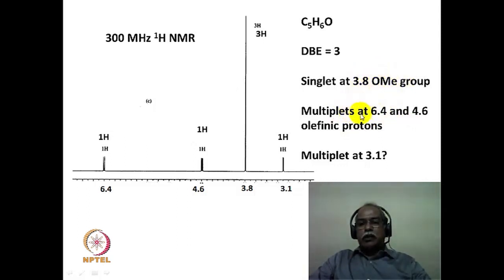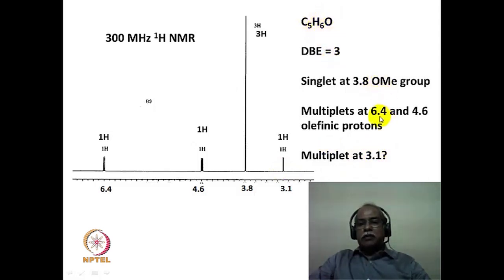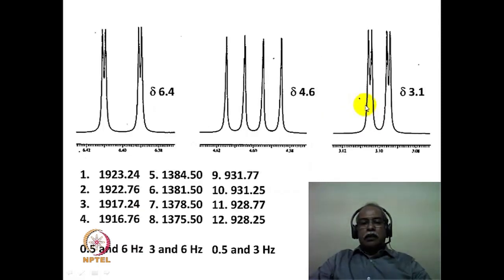The multiplets at 6.4 and 4.6 ppm fall in the olefinic region, so there are two olefinic protons — a C2H2 fragment — along with an OCH3 fragment. Subtracting C2H2 and OCH3 from the molecular formula leaves C2H. With a double bond equivalence of 3, one olefinic bond accounts for one unit, so two more must be accounted for. The multiplet at 3.1 ppm could be due to an acetylene hydrogen, since acetylene typically comes in the region between 2 to 3 ppm. If this is an acetylene hydrogen, the C2H fragment satisfies the remaining double bond equivalence.